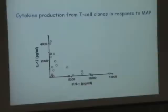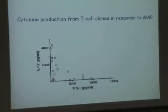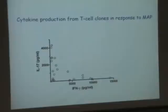Although most of the clones produced both cytokines, there was a very clear distinction. They either produced a lot of IL-17 and a little interferon gamma, or they did it the other way around.